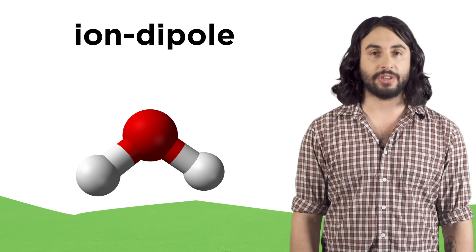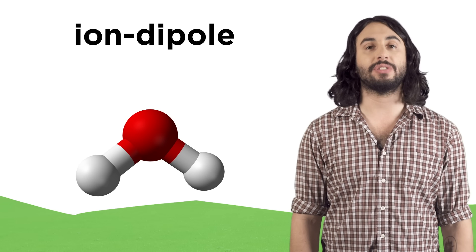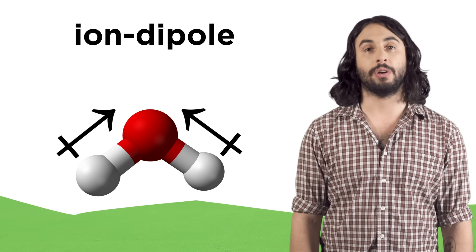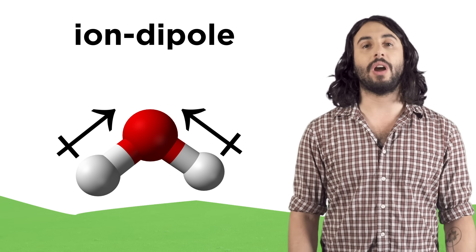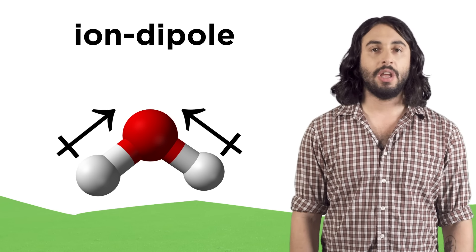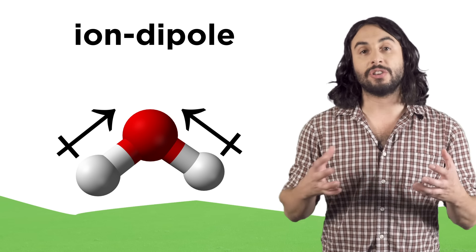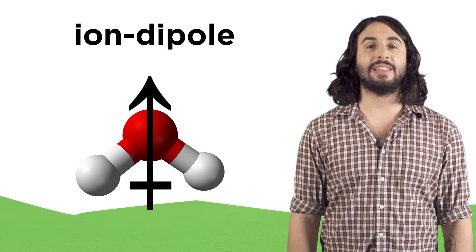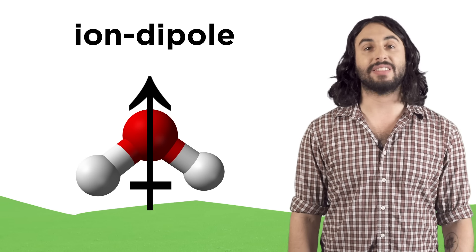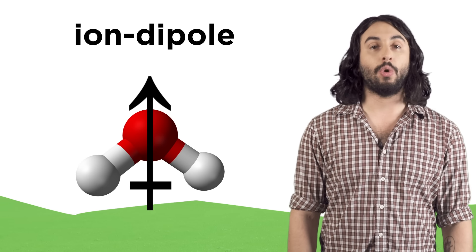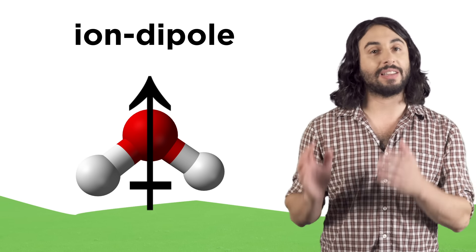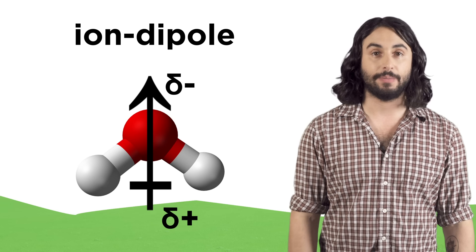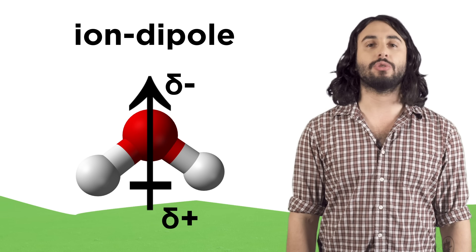After that we have ion-dipole interactions. So first we must understand what a dipole is. The covalent bonds in a water molecule are polar because oxygen is more electronegative than hydrogen and will pull the electrons in the bond towards itself. Because of the bent shape of the molecule, when we combine these vectors we see water has an overall dipole, or a side of the molecule with some electron excess and a side with electron deficiency.